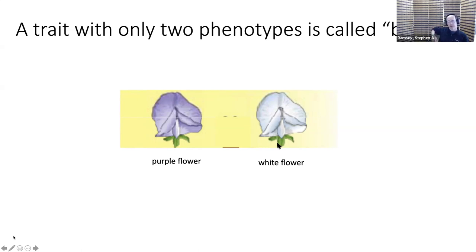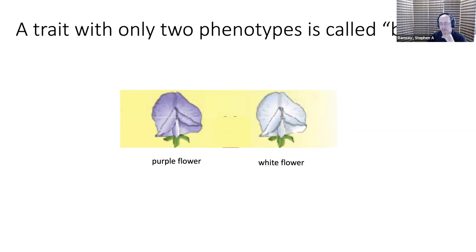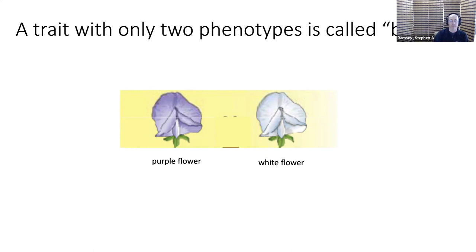With pea plants, flowers can be purple or white, so it's customary using modern terminology to call a trait with two different phenotypes a binary trait. One of the things we'll learn is that most human traits are not binary. Knowing the term 'binary trait' is useful to draw a distinction between simple genetics and more complex genetics — that's why we turn to the pea plant as a good example of a binary trait.